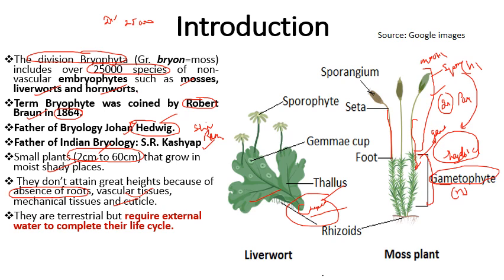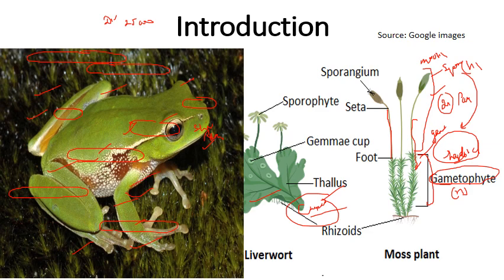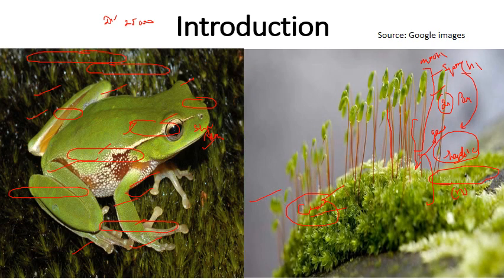Bryophytes are terrestrial but require external water supply to complete their life cycle. That is why they are considered amphibians of the plant kingdom — just like a frog, which can live both in water and on land. Similarly, bryophytes cannot complete their life cycle without water. They require water for spore dispersal and for the movement of antherozoids.